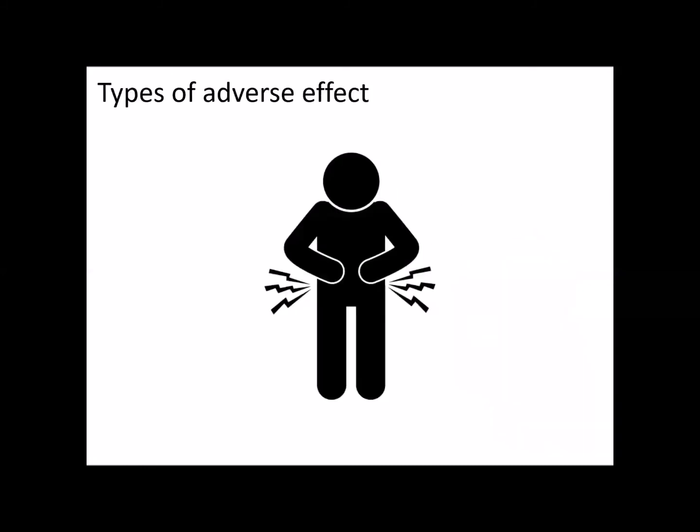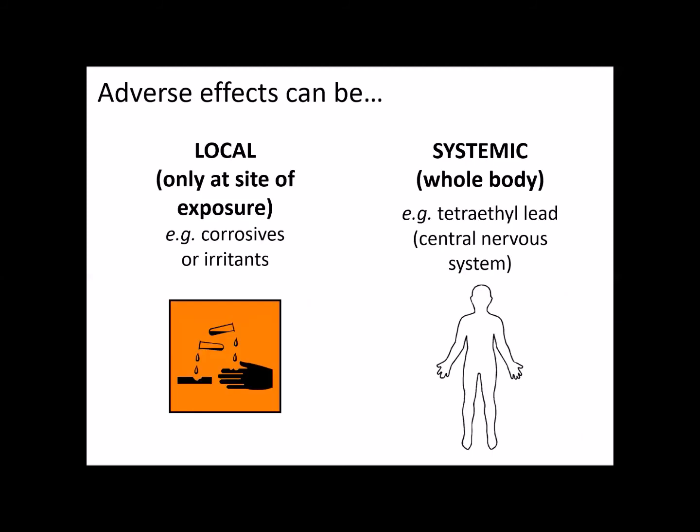So we've looked at three ways that things can get into the body. Let's look at the types of adverse effect these chemicals can have. We can classify these in different ways. The first way is that adverse effects can be local or systemic. Local is something that occurs only at the site of exposure — if you drop some concentrated HCl on your hand, you'll get an instant burn at that site. That is a local adverse effect; it's not going to damage anywhere else in the body.